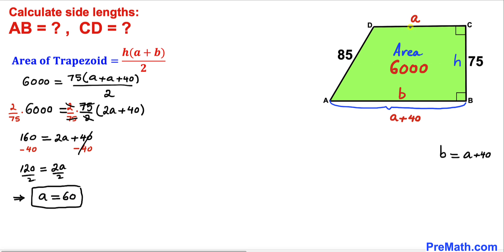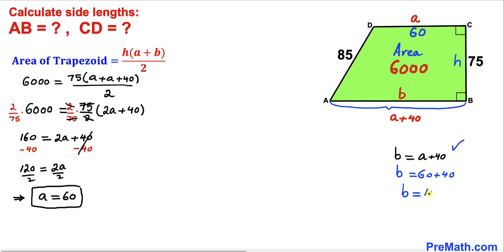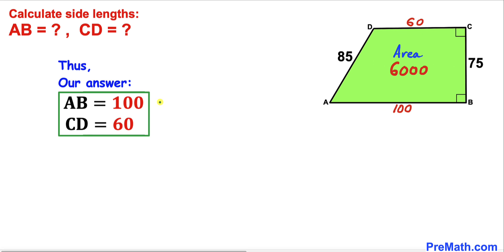Therefore side length CD, which is a, is 60 units. Since b = a + 40, b = 60 + 40 = 100 units. Therefore side length AB is 100 units. In summary: AB = 100 units and CD = 60 units. Thanks for watching — please subscribe for more videos!